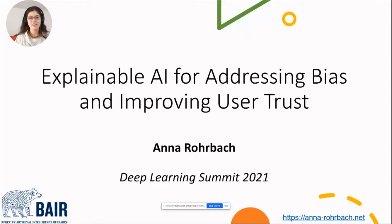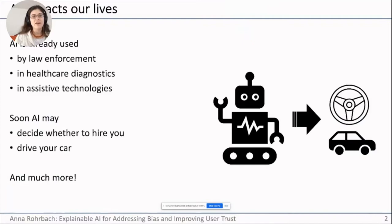Hi everyone, let's get started. Welcome to my talk on explainable AI for addressing bias and improving user trust. I'm Anna Rohrbach, a research scientist at UC Berkeley. I'd like to start with something that may be obvious to all: AI these days impacts all of our lives, and it has started to affect our lives in many areas.